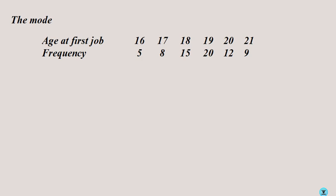The mode here is very easy to calculate — it doesn't actually require calculation. The highest frequency is 20, so the age that was most repeated was 19. The mode is simply 19. This has been an introduction to summary statistics — the measures of location: the mean, the median, and the mode — in the case where you have individual data points or when data is presented in a frequency table. We'll discuss more in class.